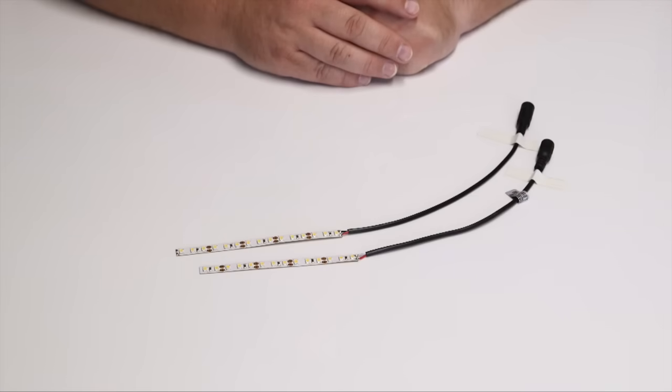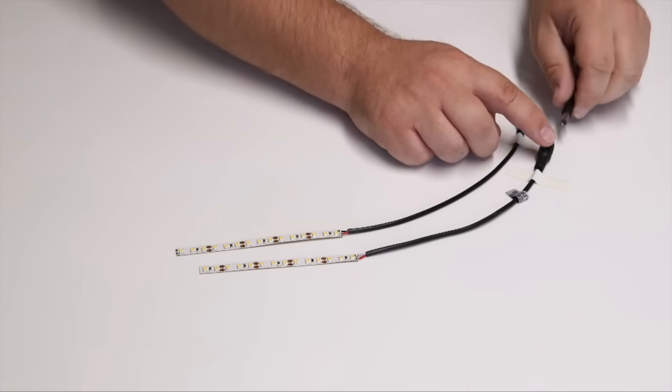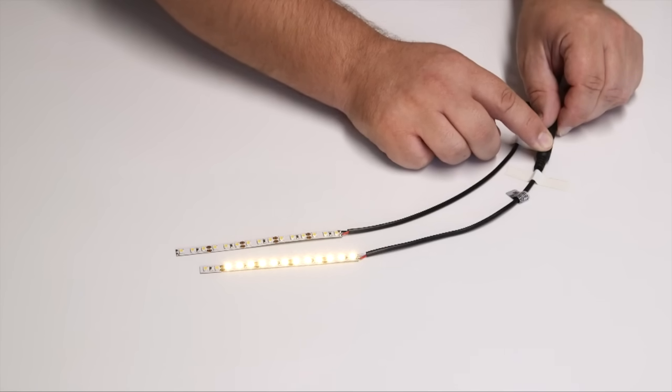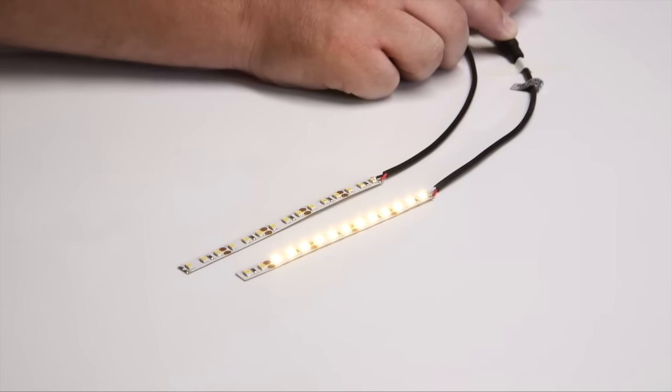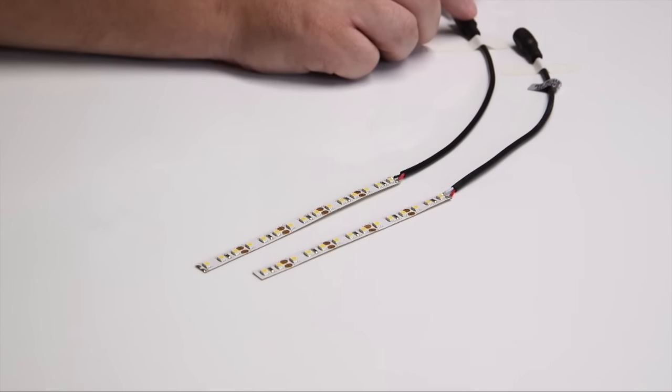In this example you can see the strip has been cut incorrectly. There are two LEDs not lit. Whilst here you can see the one that has been cut correctly is fully functional.